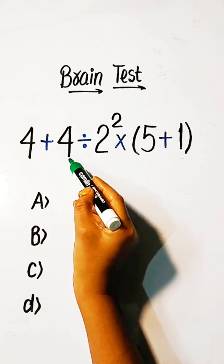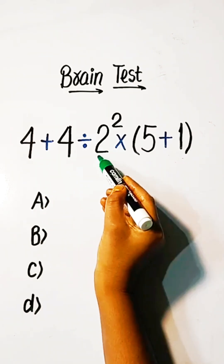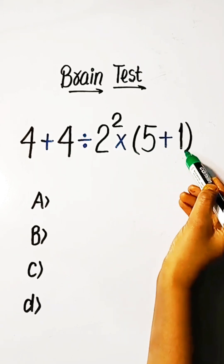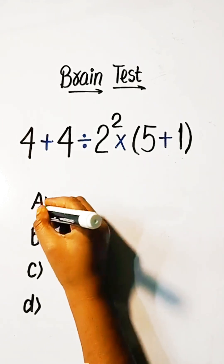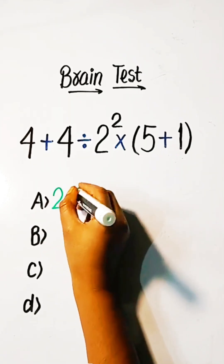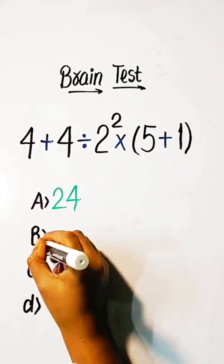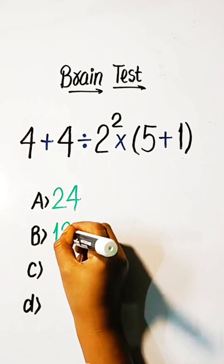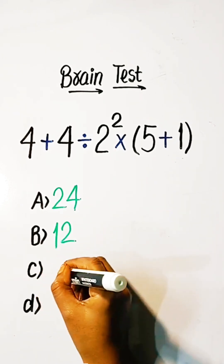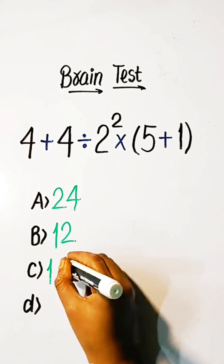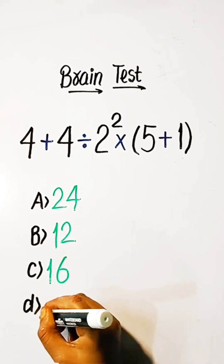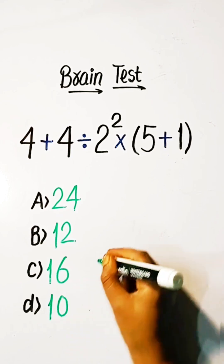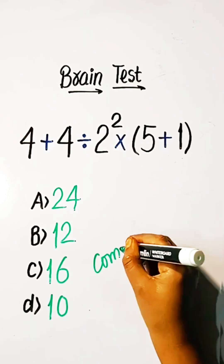4 plus 4 divided by 2 square into 5 plus 1 equals to what? Option A, 24. Option B, 12. Option C, 16. Option D, 10. Comment your answer.